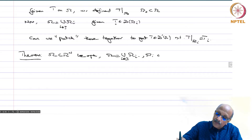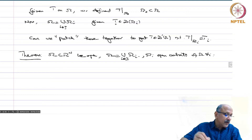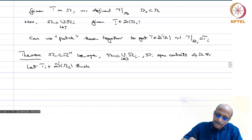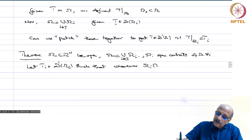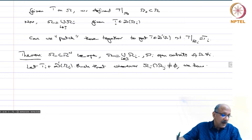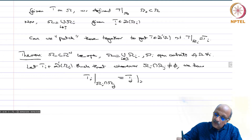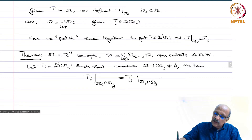Omega_i are open subsets of omega. Let t_i belong to D'(omega_i), such that whenever omega_i intersection omega_j is non-empty, we have t_i restricted to omega_i ∩ omega_j equals t_j restricted to omega_i ∩ omega_j.